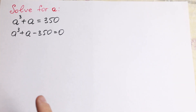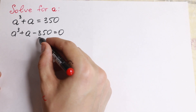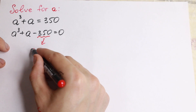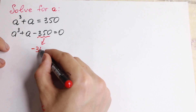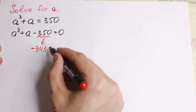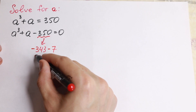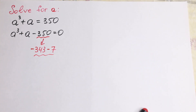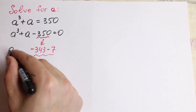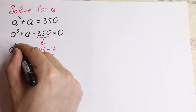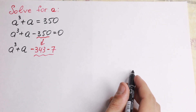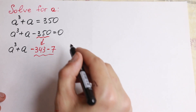Right now I see a really interesting moment because this 350 is really good to write as minus 343 and minus 7. So this is the same as right here. Later you will understand why I write it like that.